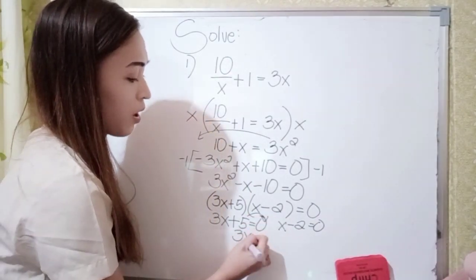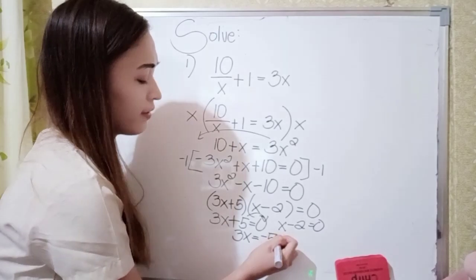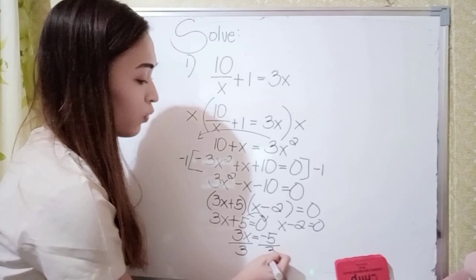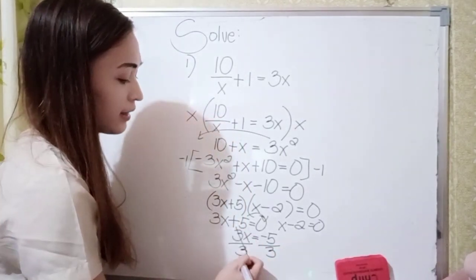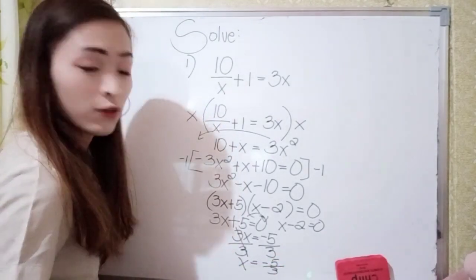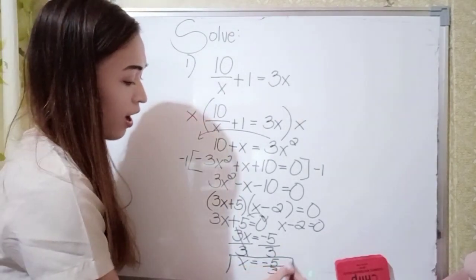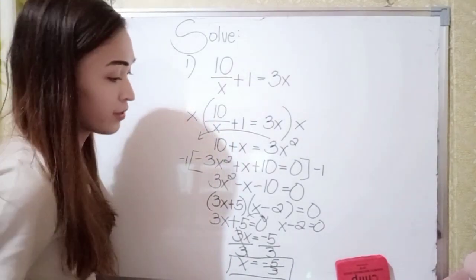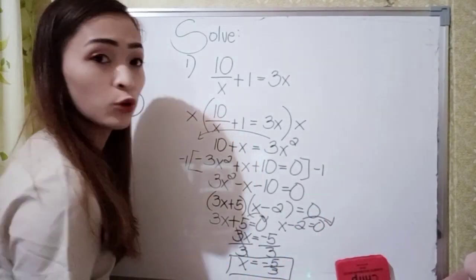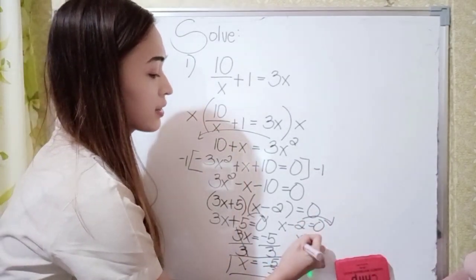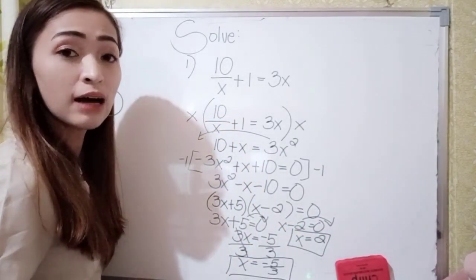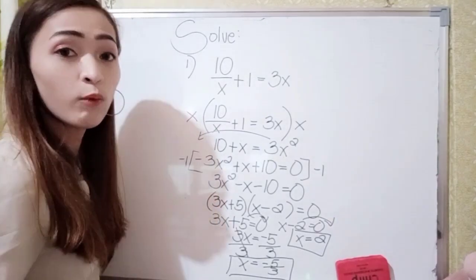So 3x equals negative 5. Divide both sides by 3 — cancel — giving x equals negative 5 over 3, which is our first solution. Next, x minus 2 equals 0, so transpose negative 2 to the right: x equals positive 2. So our second solution for example number 1 is x equals 2.